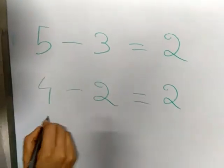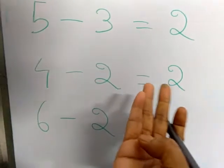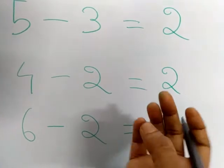The next is 6 minus 2. After 2, count 3, 4, 5, 6. Count 1, 2, 3, 4.